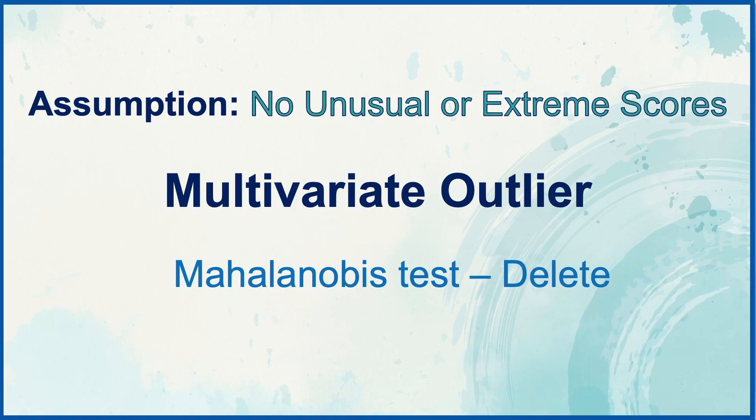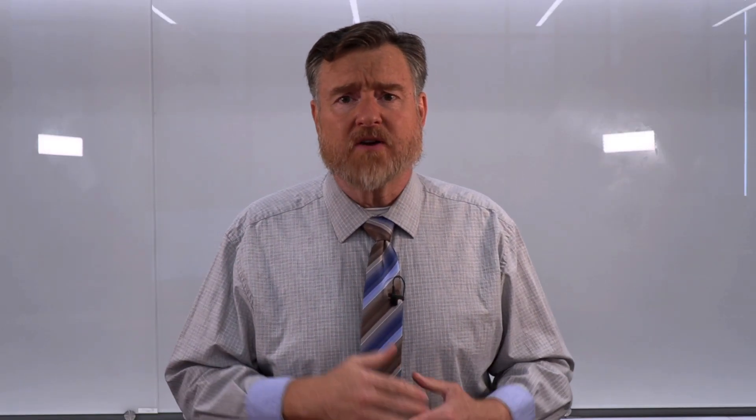There's another type of outlier called a multivariate outlier. This is an individual who is an outlier not on a single scale, but on multiple scales. When we have multivariate outliers, we have no choice but to delete that set of scores from our data set. We would find multivariate outliers using a Mahalanobis test. I've already done a video about outliers covering what causes them and how they can be fixed, so I refer you back to that video if you want to know more.